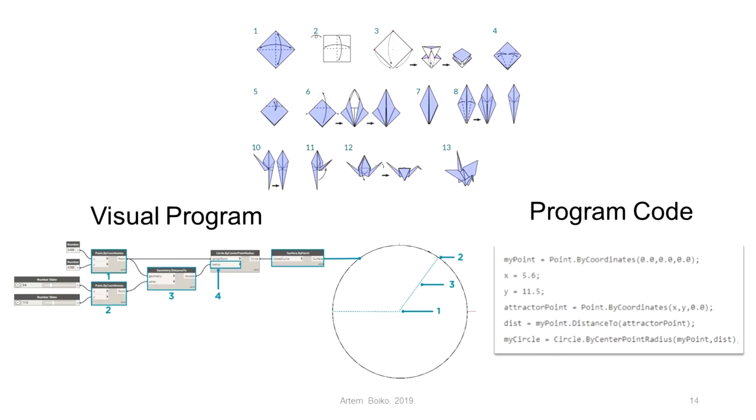In Dynamo, instead of complex code, blocks are used that are written in human language. For example, if you want to draw a circle through two points, you have two options here.